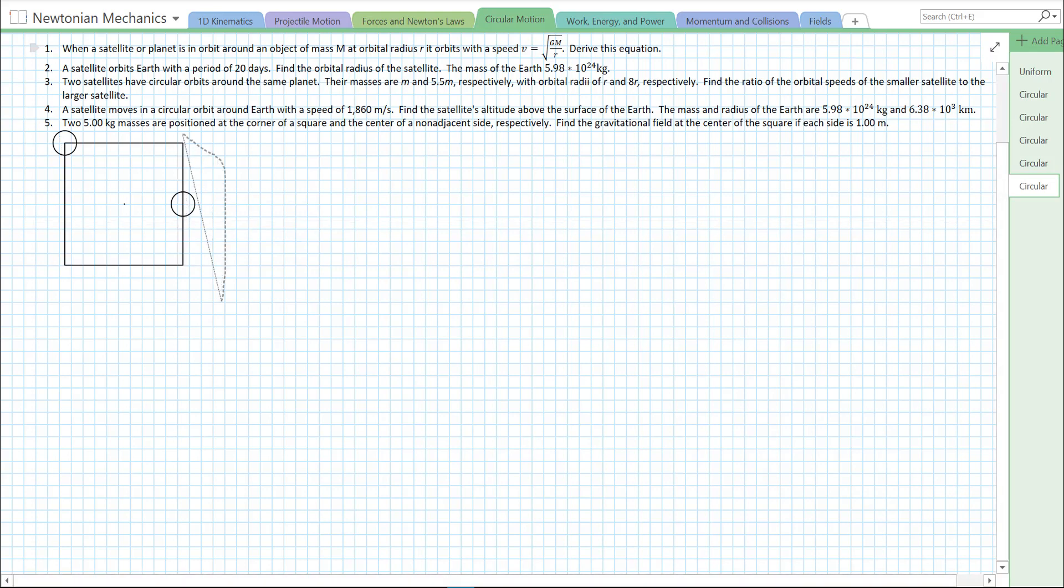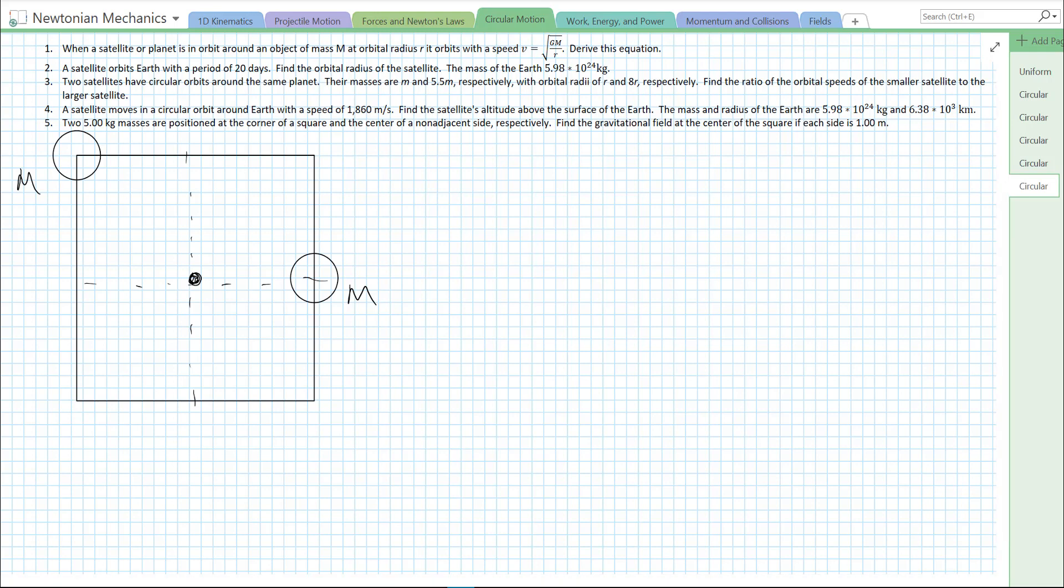So, I have a little diagram here. Let's just scale it up quite a bit. So, we have our two masses. We have M, M, and M, and they're the same. We're looking for the gravitational field right at the center here. And we know that each side is 1.00 meters.